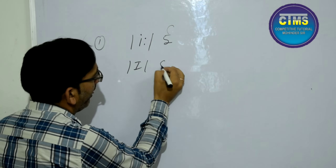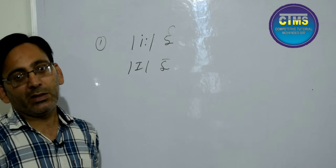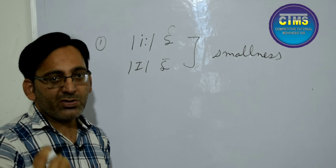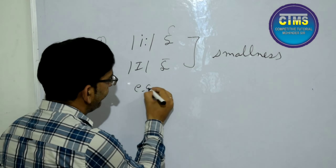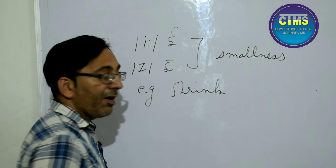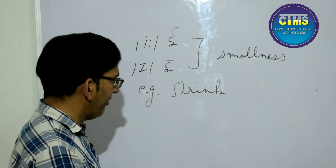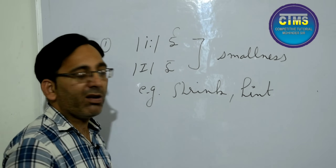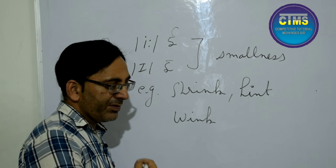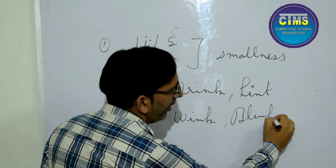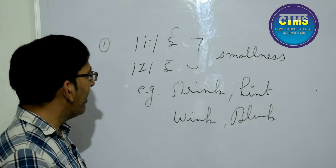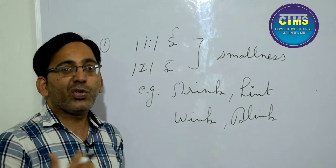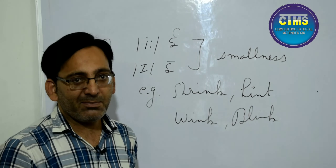In English, in phonetics, both the short-e and long-e sounds suggest smallness. They both convey the idea of smallness. For example, the word 'shrink' — our shirt shrinks, so it becomes small. Another word is 'hint' — a hint is always small. Similarly, 'wink' and 'blink.' In this way, there are so many words in English where the long-e and short-e sounds both convey smallness.